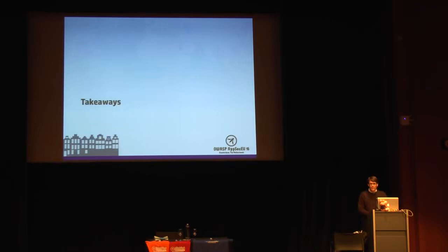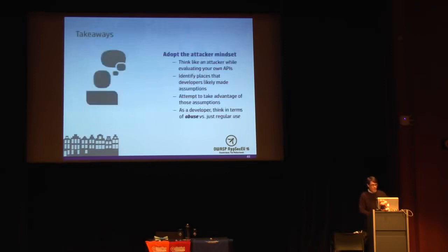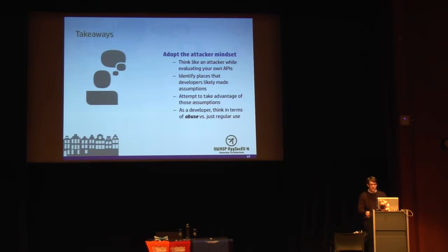A couple of quick takeaways in evaluating APIs: adopt the mindset of an attacker. Don't just think about how your backend web services and mobile apps should be used — also think like an abuser and how bad guys might use your backend systems. Try to identify places in your applications that could be vulnerable or interesting. Look for sensitive transactions, look for interesting parameters like order IDs and customer information, enumerate through them, and don't just think of use cases — think of abuse cases.